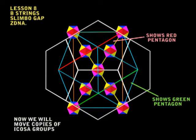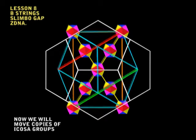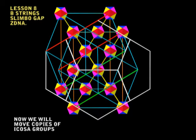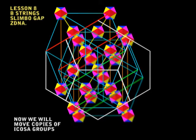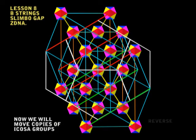Now I've got something interesting to show you. I'm going to move a copy of this group with 10 icositas and I'm going to move it along the vector. Now isn't that something? And now we make a copy in the opposite direction. And now you can see that the red pentagon and the green pentagon lines up perfectly to the faces of the dodeca.